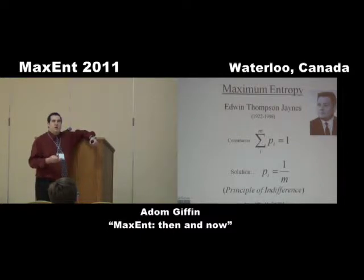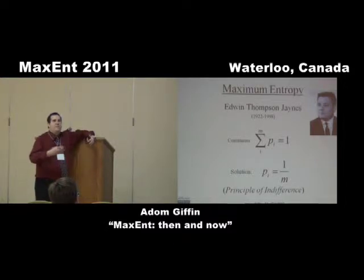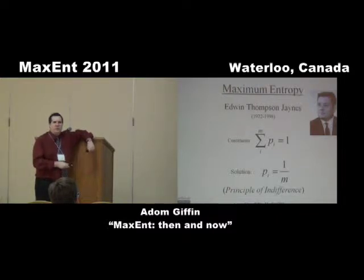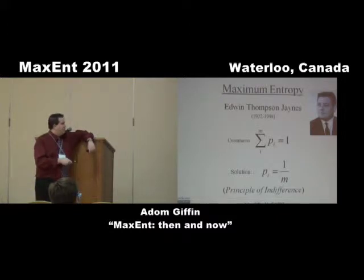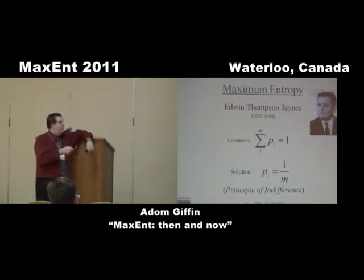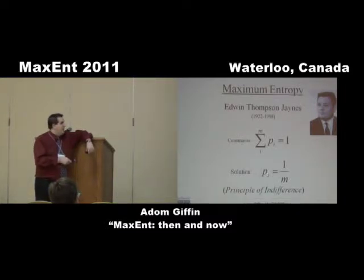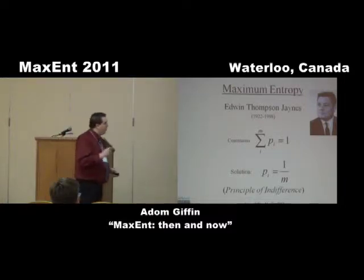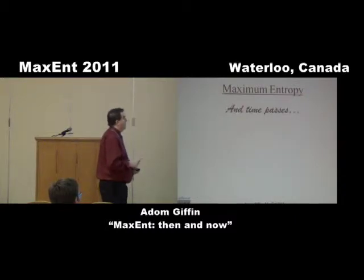The issue was: who says you have this prior, this weight on your likelihood? Why should you pick this among others? To me, this is an absolutely critical result from Jaynes — it puts an end to that debate. If you use maximum entropy to assign a probability and you don't have any information, you get a uniform distribution. This is really, really important, and he doesn't get enough credit for it.